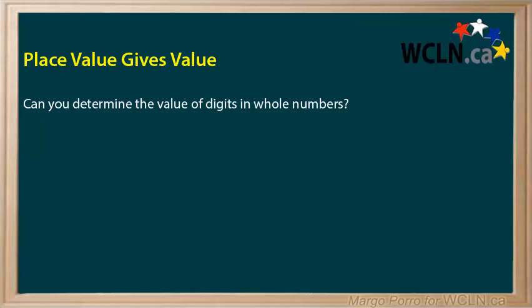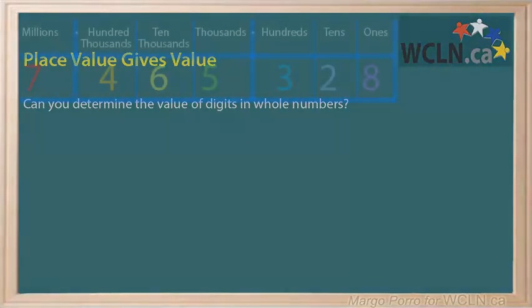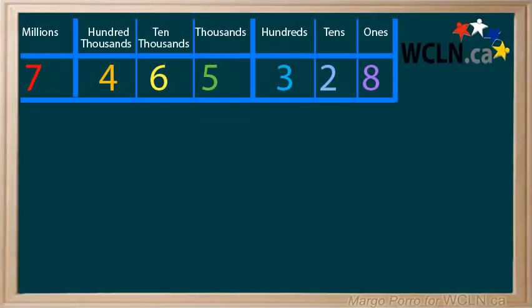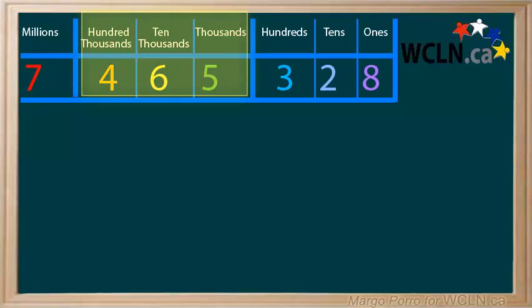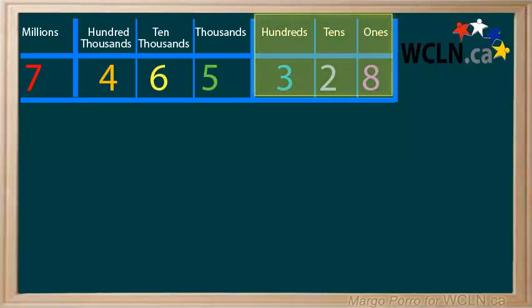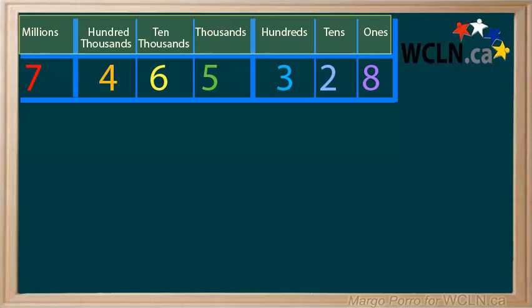Hi, this is Margot Poro from the Western Canadian Learning Network. Can you determine the value of digits in whole numbers? Let's take a look at this number, 7,465,328. The place value chart at the top of the screen can help when you are trying to determine the value of the number.